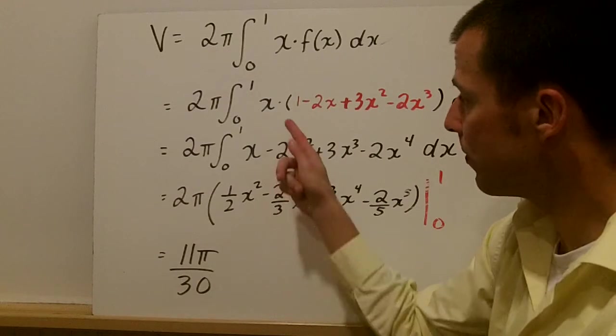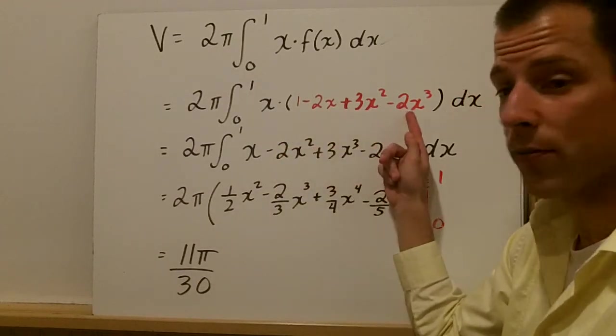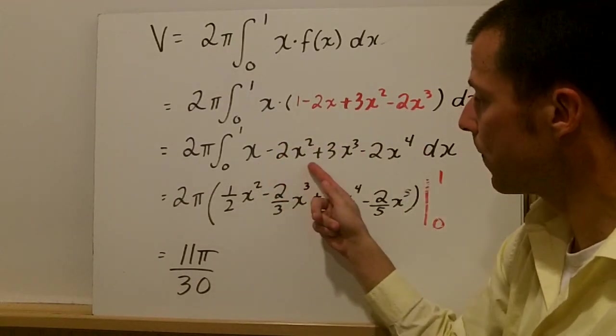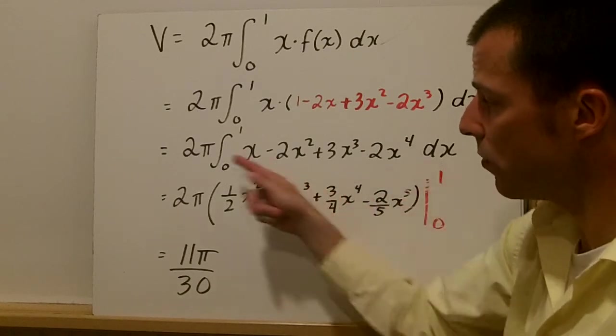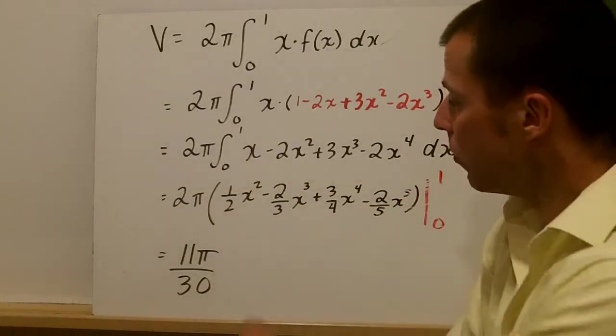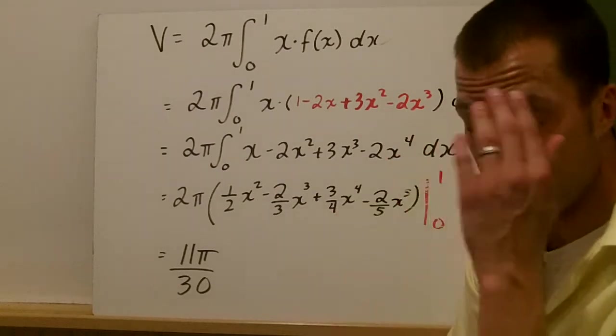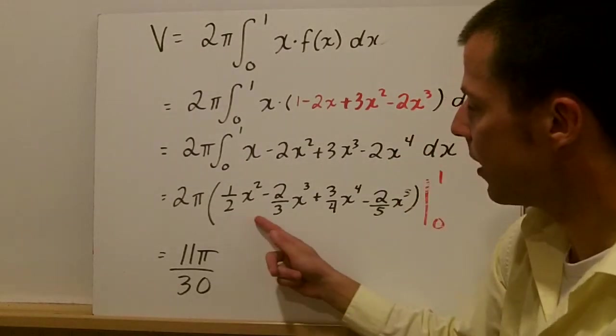We substitute and then you have to multiply x times each one of these terms, which is what we did here. 2π comes along for the ride, the interval stays the same. Once you multiply x through, you have to integrate each term. We've done that here.